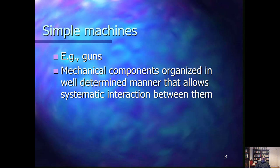Machines have been used in many contexts in society for at least millennia. At the beginning, these were very simple machines. Today, we have many complex machines. Let's look at how machines can be interpreted in the context of society through the systems theoretic approach. If you look at simple machines, for example consider a gun — it has a number of components, but the number is relatively small, so it is a relatively simple machine.